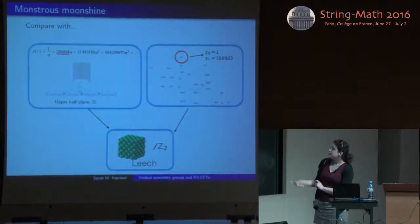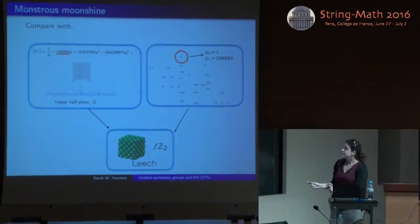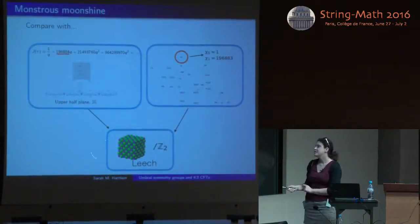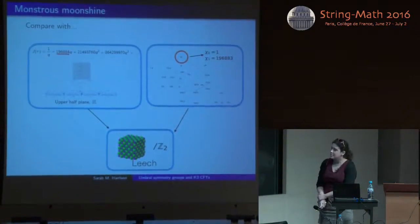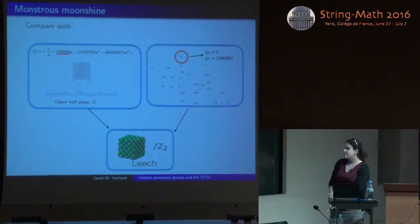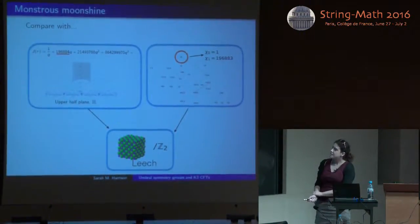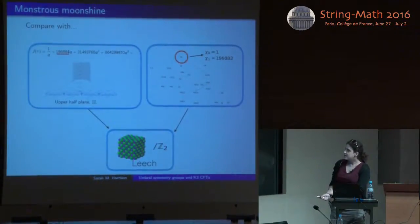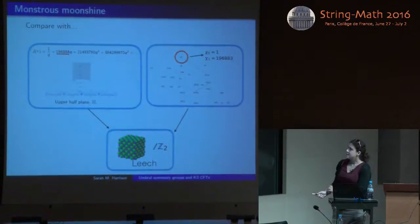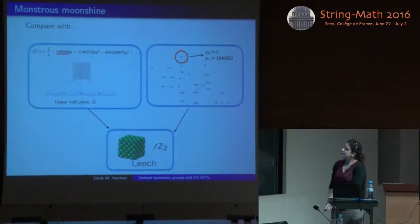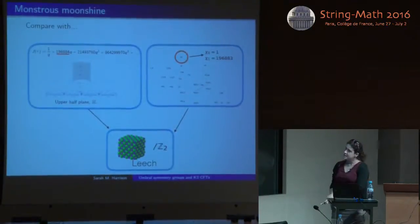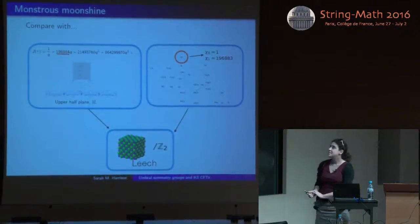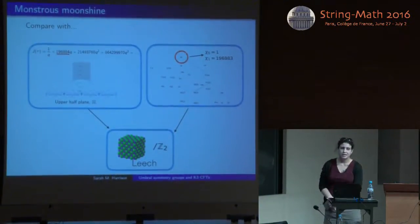This connection was very mysterious until it was eventually explained by a construction of a particular chiral conformal field theory by Frenkel, Lepowsky, and Meurman: a bosonic chiral CFT of central charge 24 compactified on a 24-dimensional torus given by R^24 modded by the Leech lattice. The Leech lattice is a particular 24-dimensional even unimodular lattice with no vectors of length squared two. If you take this CFT and orbifold by a Z2 symmetry which is a reflection about the origin, you find it has partition function given exactly by J and symmetry group which is the monster group — all states fall in monster representations.